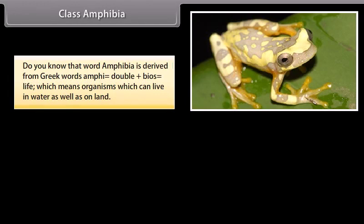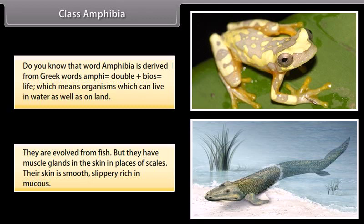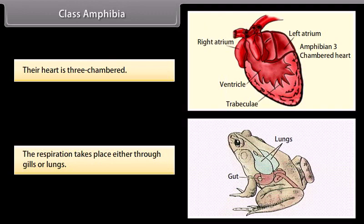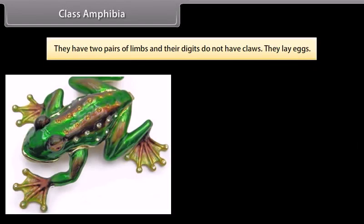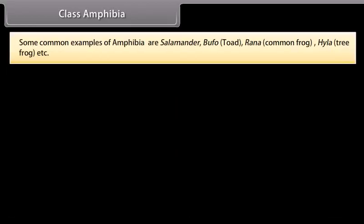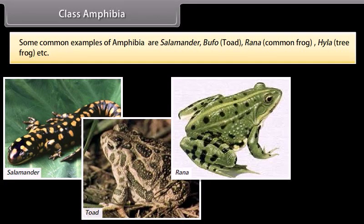Class Amphibia. The word Amphibia is derived from Greek words: amphi, meaning double, plus bios, meaning life — organisms which can live in water as well as on land. They evolved from fish, but have mucus glands in the skin in place of scales. Their skin is smooth, slippery, and rich in mucus. Their heart is three-chambered. Respiration takes place either through gills or lungs. They have two pairs of limbs and their digits do not have claws. They lay eggs. Some common examples of Amphibia are Salamander, Bufo (Toad), Rana (Common Frog), and Hyla (Tree Frog).